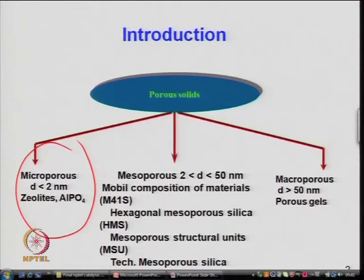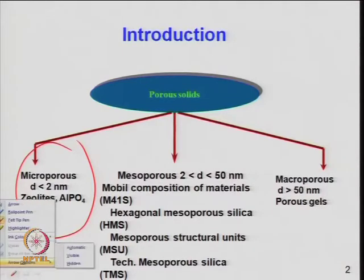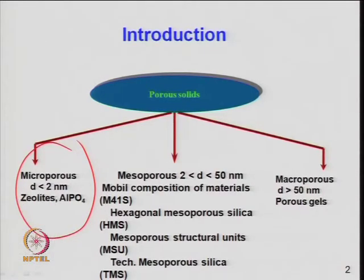These porous materials are available in a wide range and can act as molecular sieve materials or adsorbents for removal or purification of gases. Macroporous materials have pore size greater than 50 nanometers or 500 Ångström — these are traditional alumina materials when pelletized.